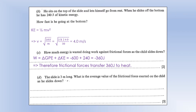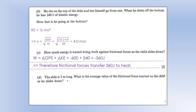The slide is 3 metres long. What is the average value of the friction force exerted on the child as he slides down? We know that work done is force times distance. We know the work done is 360 joules and the distance is 3 metres, so the friction force is 120 newtons.